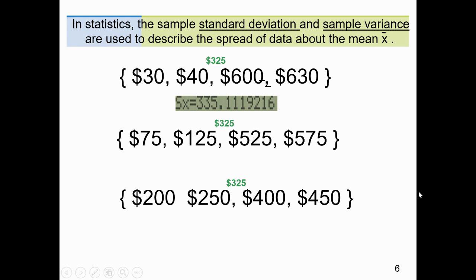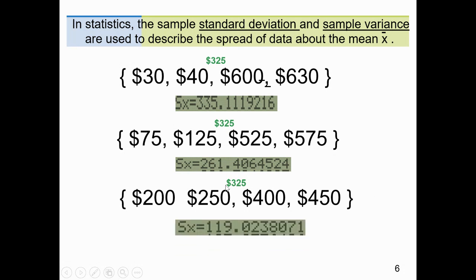And as you may assume, the standard deviation for these four prices is only 119. The reason being is that these numbers, the 200 and 250 and the 400 and the 450, are closer to this mean number, this middle number. These here are further away, and these prices are really spread away from the mean number of $325.